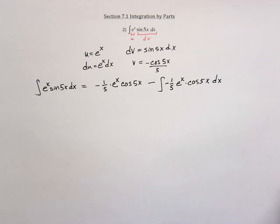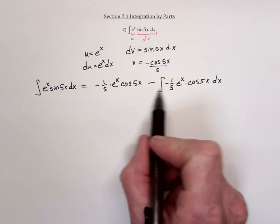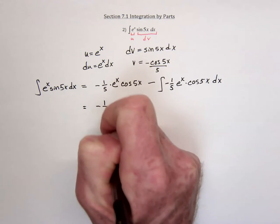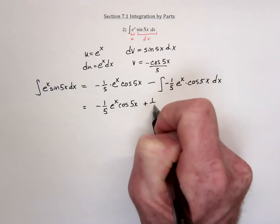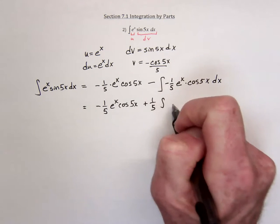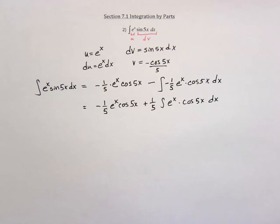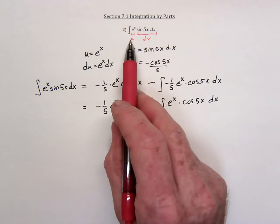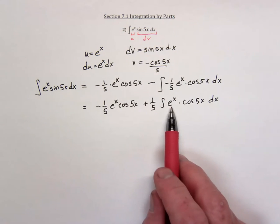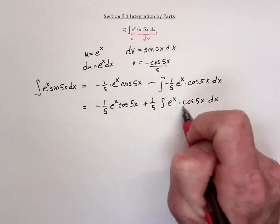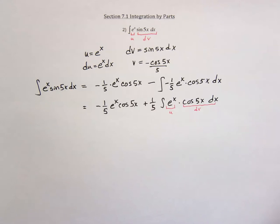We're about halfway done. We now need to do integration by parts again on the remaining integral. To keep track of everything, I'm going to factor out the negative one-fifth and rewrite that part. With the two negatives it becomes a positive one-fifth, and now I need to integrate e to the x cosine of 5x dx. I should be consistent and let u be the transcendental function — the e function — while dv is the trig function.